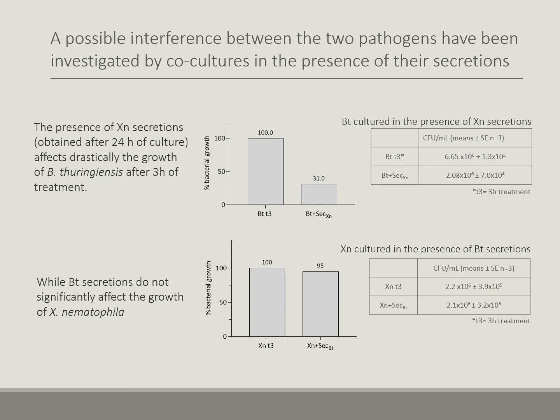We also investigated possible interference between the two bacteria, and in particular whether the mutual secretions affected their growth. We cultured Bt in the presence of Xn secretions, and Xn in the presence of Bt secretions. The data highlighted that Bt secretions did not affect the growth of Xn symbiont, while when Bt was cultured with Xn secretions, a significant reduction in growth was observed.